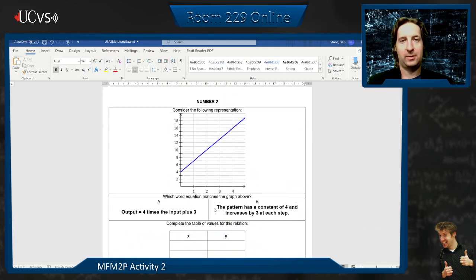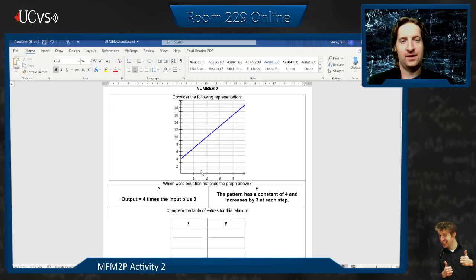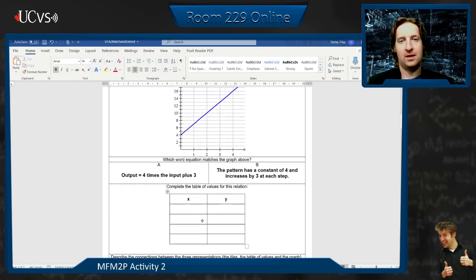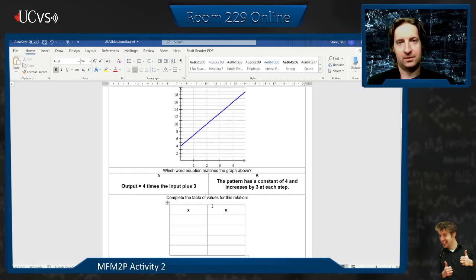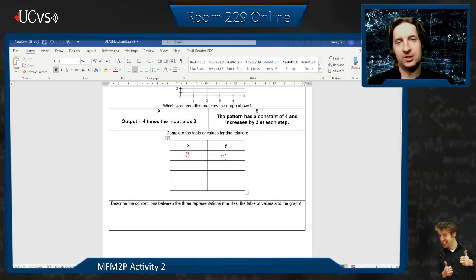And the next one here, we have a graph. Tell me which word description matches the graph. And then using this graph data, make a table of values. So here, for example, we're starting at the x value of zero. The y value is four. Okay? And then again, what's the connection?